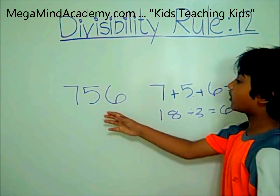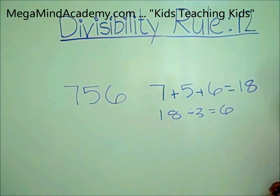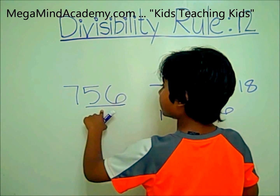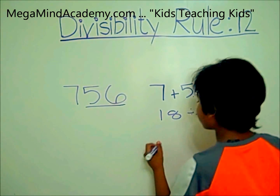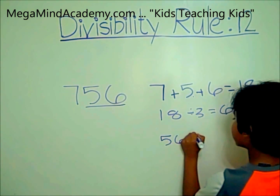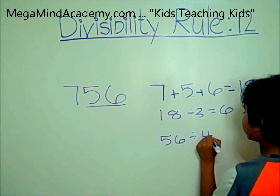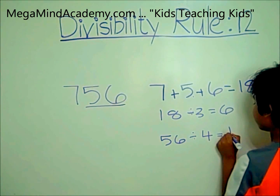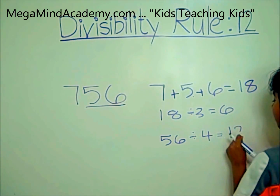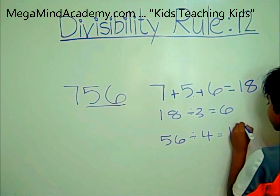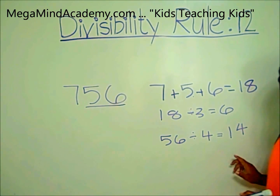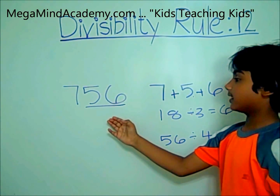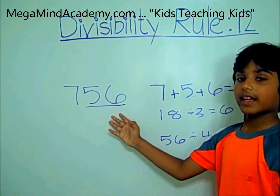Let's see if 756 is divisible by 4. The last two digits are 5 and 6 — that's 56. So 56 divided by 4 equals 14, without any remainder. So that means 756 is divisible by both 4 and 3.